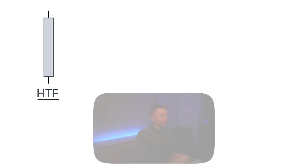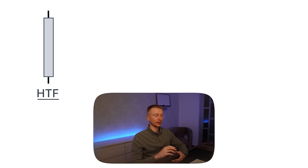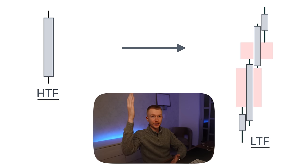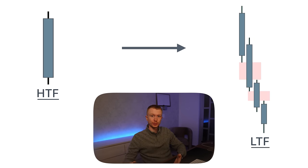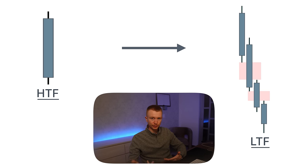When we have one singular candle that is a disrespect candle, what happens on the lower timeframe? On the lower timeframe, that can be seen as fair value gaps going higher. The same can be said about the bearish variation: if we have one singular disrespect candle going lower, then that can be seen as multiple fair value gaps going lower on the lower timeframe — so inside that candle.